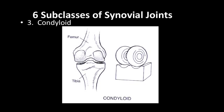Next is a condyloid joint, so named because of the large rounded features or condyles at the ends of bones. Here you're looking at the posterior view of the knee. The distal end of the femur has two large round condyles that fit into grooves atop the tibia. When the knee flexes, these condyles appear to roll inside those grooves of the tibia. We'll look more closely at the knee joint later.